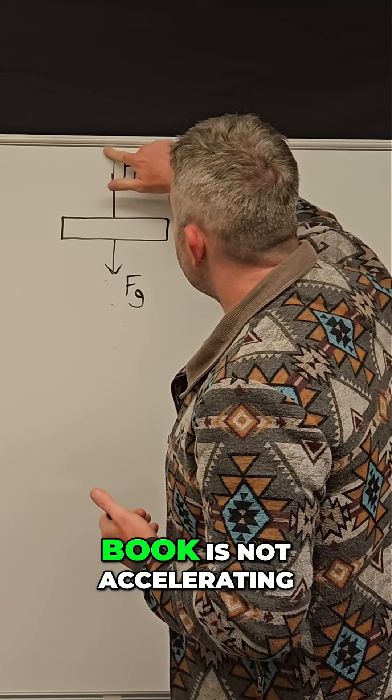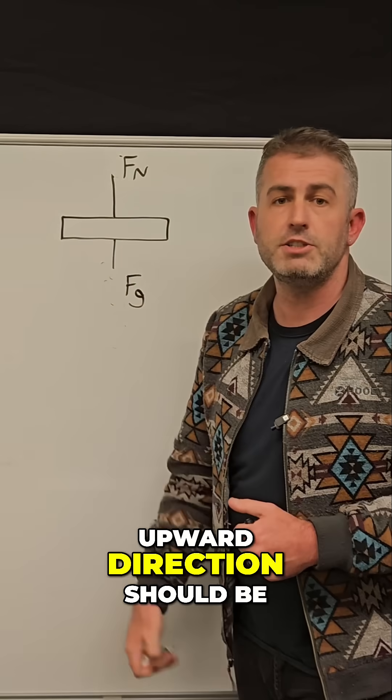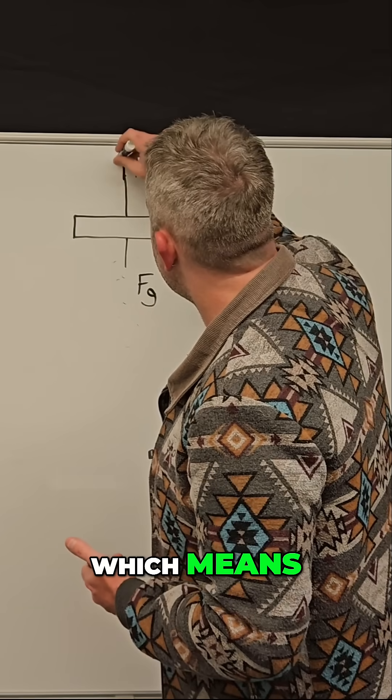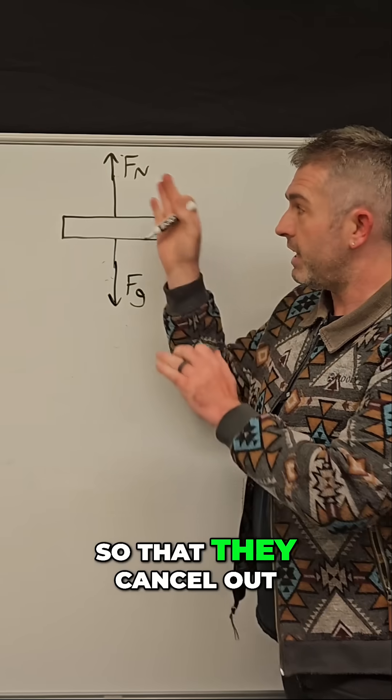So if this book is not accelerating, that means the force in the upward direction should be exactly as strong as the force in the downward direction, which means it should be like this, equal forces, so that they cancel out.